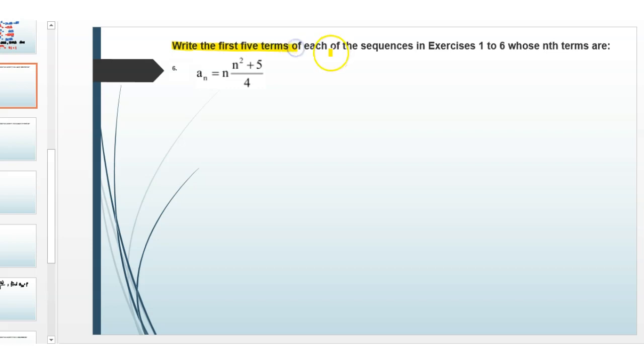Today's question is: write the first 5 terms of the sequence whose nth term an equals n(n² + 5)/4. First, we write the nth term: an = n(n² + 5)/4.